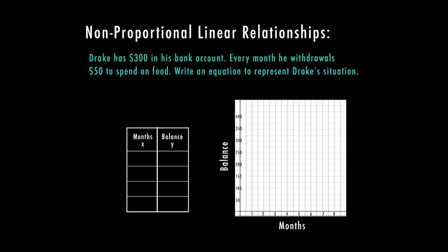Our first equation was Y equals MX plus B. In order to fill this in, we need to see what is happening continuously and what is happening one time. The thing that's happening continuously is the $50 because he's doing this every month. And he's withdrawing this, this is very important. If I'm withdrawing money, that means I'm taking it out. So in this case, my M is a negative 50X.